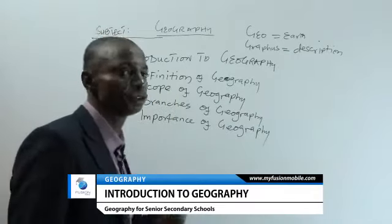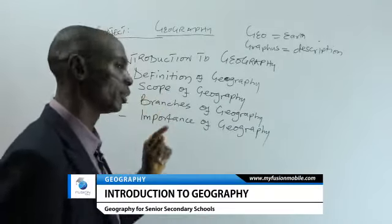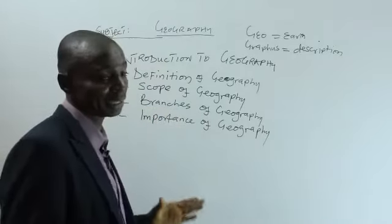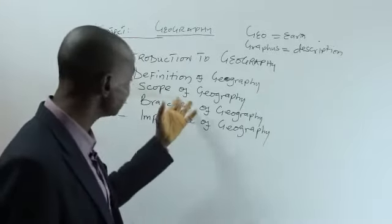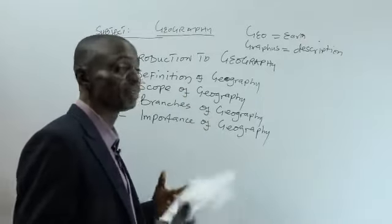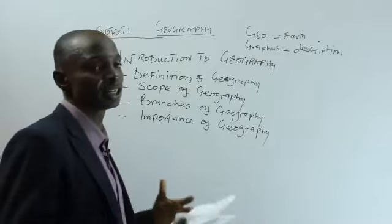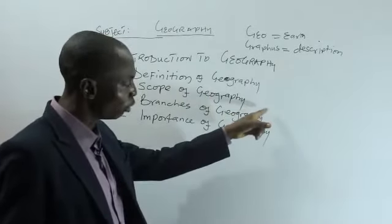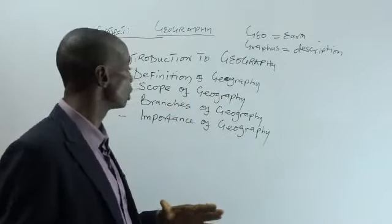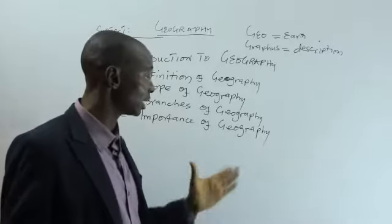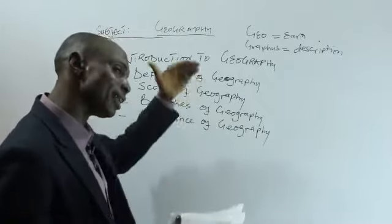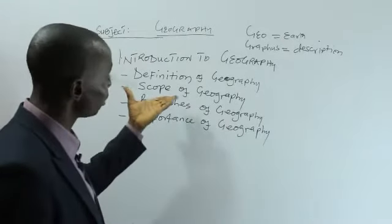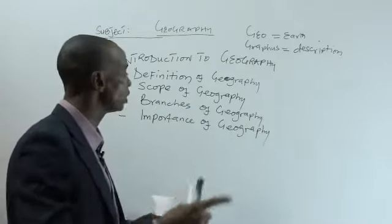We are going to look at the scope of geography. When we are talking about the scope of geography, we are talking about the relationship between geography and other subjects. Geography cannot be isolated as an art subject — it interrelates with other subjects like government, physics, chemistry, biology, and economics. Any subject you study in detail, you are going to find geography there. So geography is very wide and very versatile.